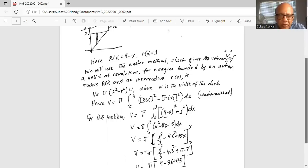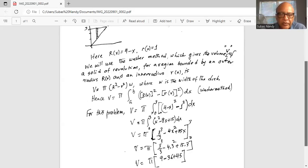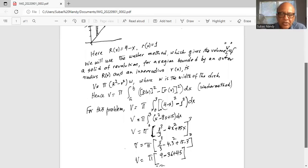So it becomes when we integrate x cubed by 3 for the first term, next term is 8x square by 2 or minus 4x square plus 15x limits from 0 to 3. So the lower limit does not matter because it's 0.